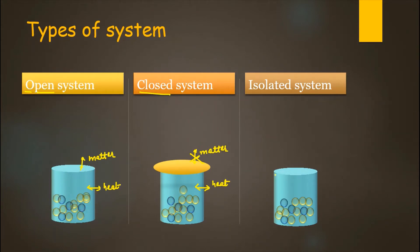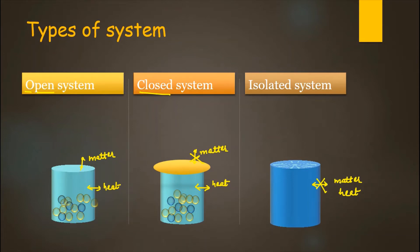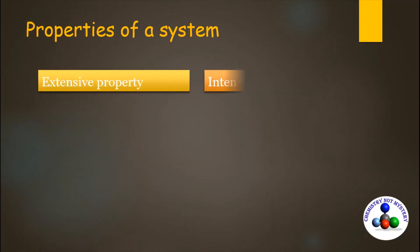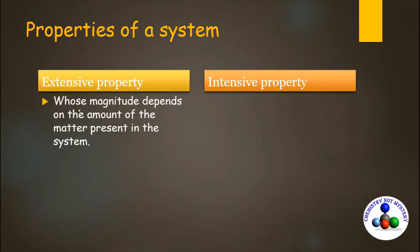And if you place an insulating jacket on this system, then neither matter nor heat can be exchanged. This system is called an isolated system. Every system has some properties, and these properties can be extensive or intensive.